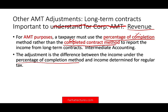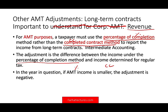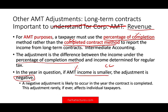The adjustment is the difference between income under the percentage of completion method and the income determined for regular tax purposes. We compute income based on percentage of completion, compare that to the completed contract method, and find the difference. In some years you'll have positive adjustments, in other years negative adjustments. If AMT income is smaller, the adjustment is negative — and you like negative adjustments because negative adjustment means less AMT.